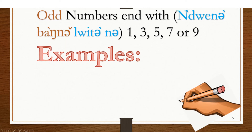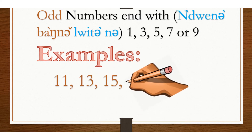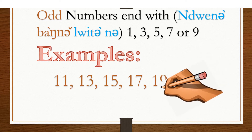Odd numbers end with 1, 3, 5, 7, or 9. Examples: 11, 13, 15, 17, 19. 11 ends with 1, so it is odd. 13 ends with 3, so it is odd. 15 ends with 5, so it is odd. 17 ends with 7, so it is odd. 19 ends with 9, so it is odd.